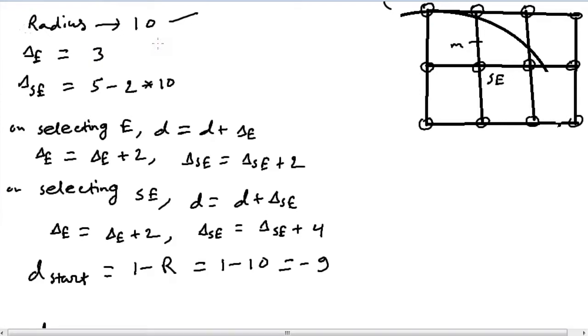And del_se becomes 5 - 2r, which is 5 - 2×10 in this case, and that gives us 5 - 20, that's -15.